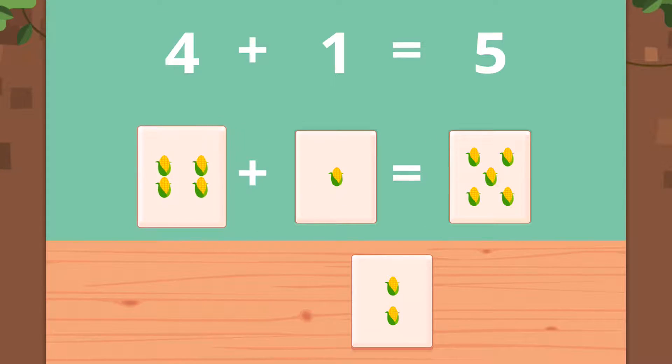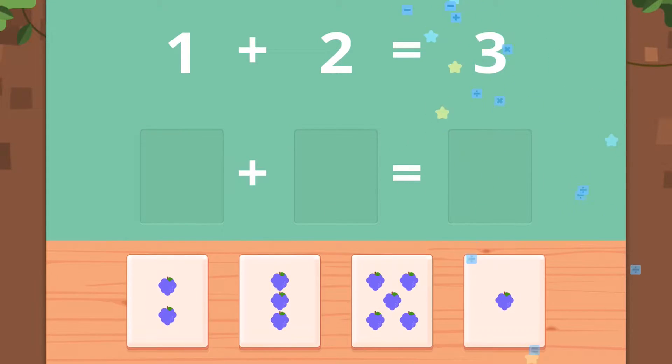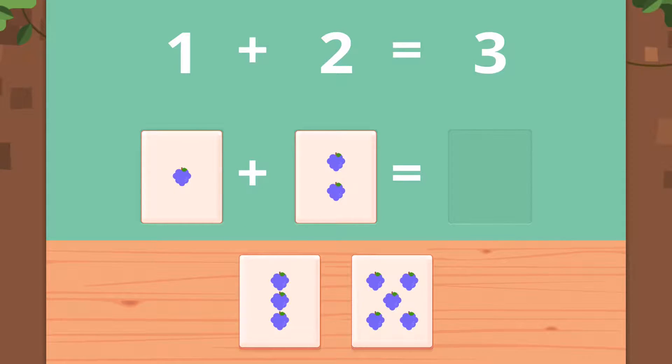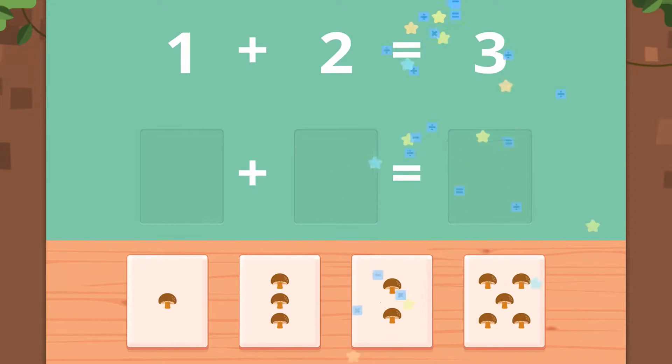Now here we have one plus two equals three. One plus two equals, there we go, one plus two equals three. Here we have it again, one plus two equals three.